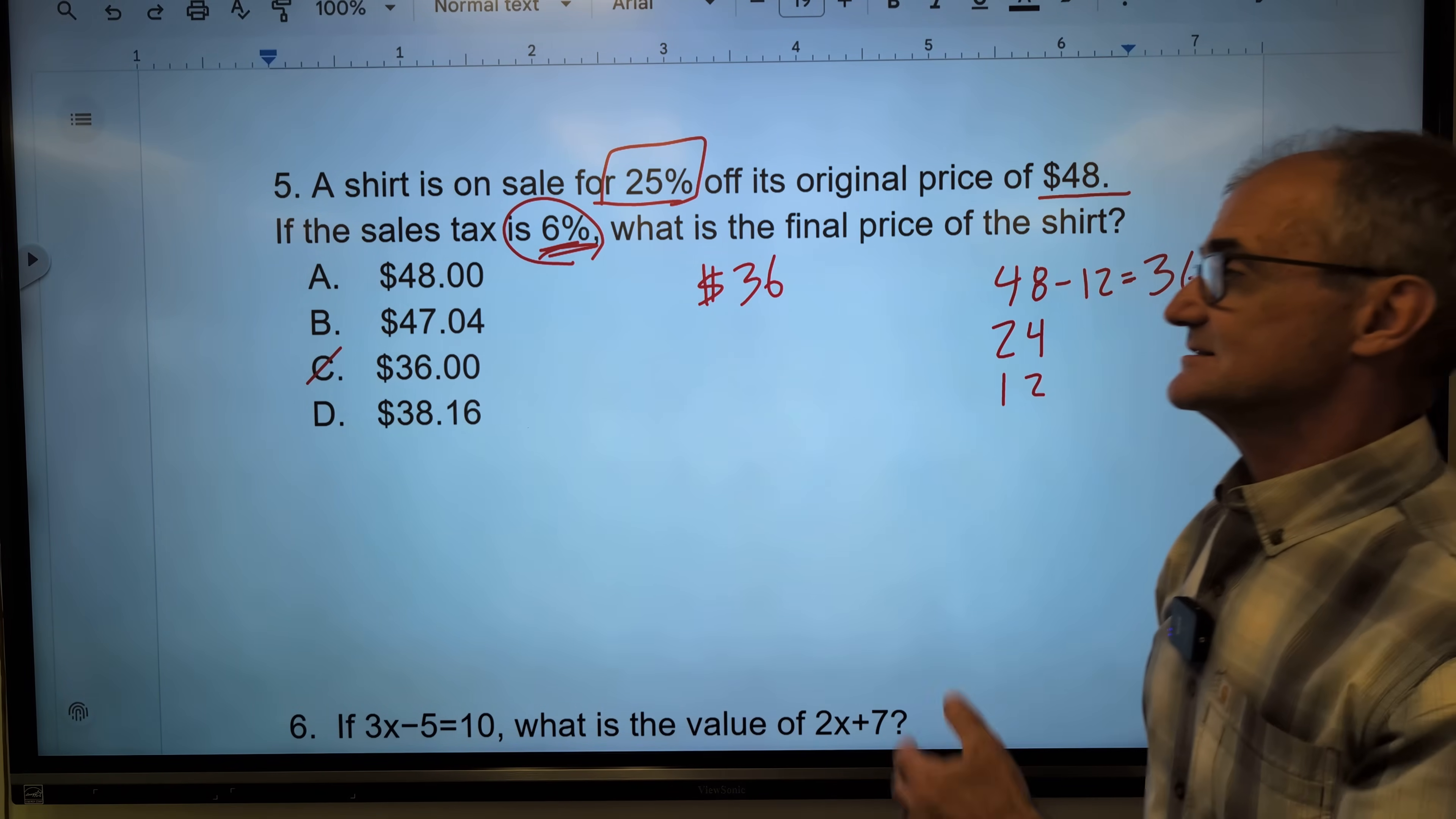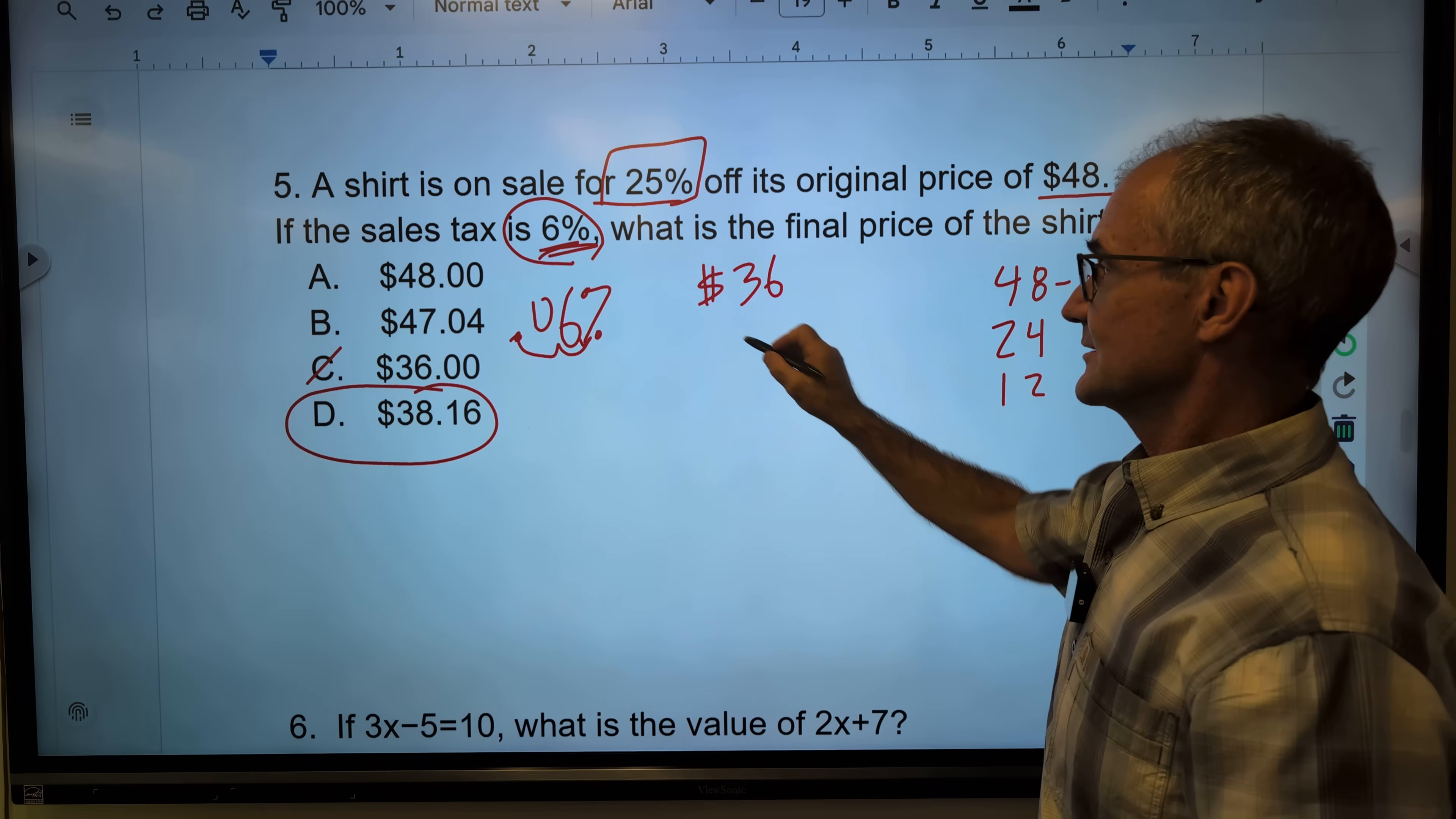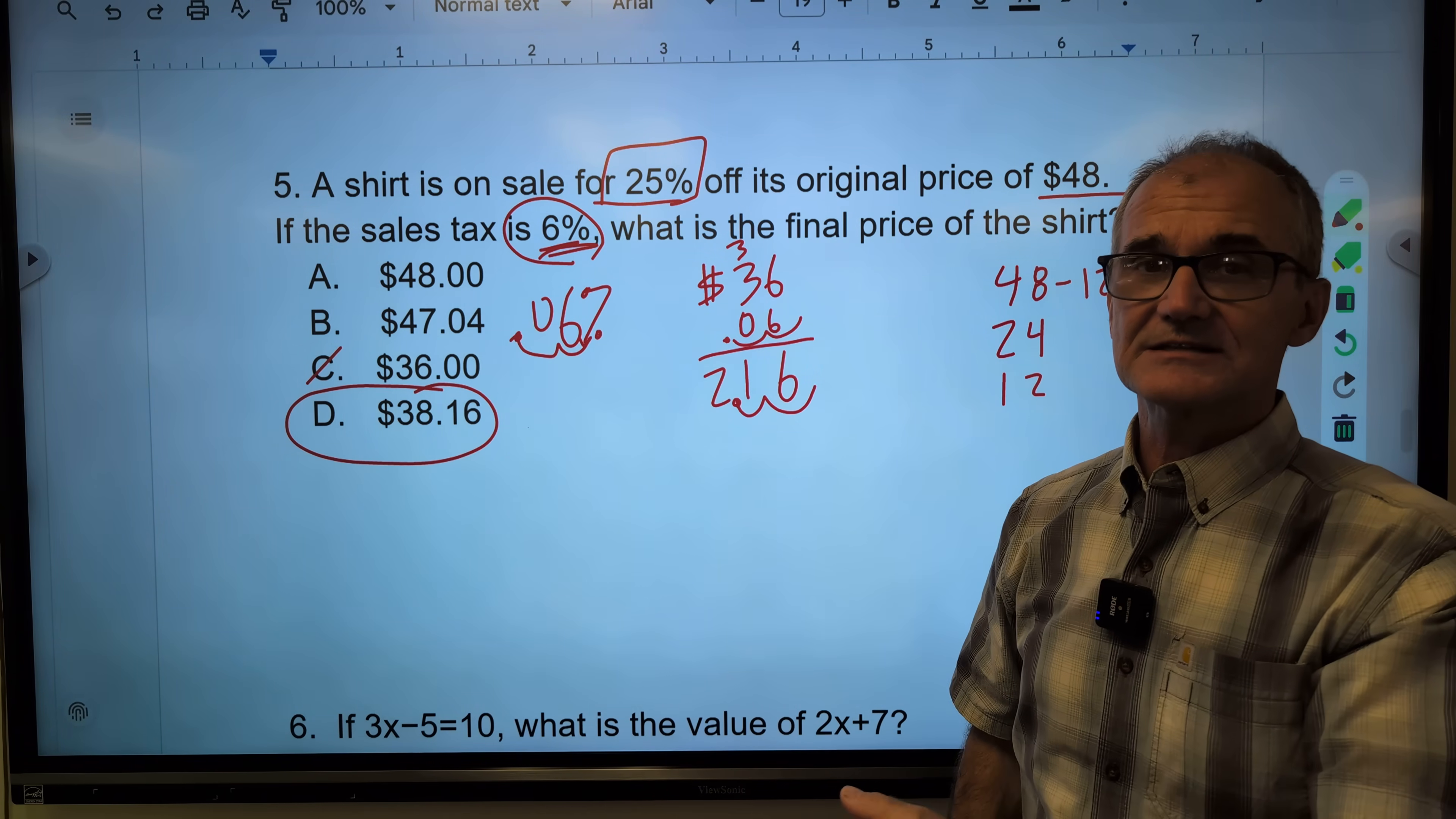If I wanted to multiply that out and get the exact answer, I would take that 6%, convert it to a decimal - I think of this thing as an arrow shooting it over one, two places. So 6% is 0.06. I'm going to put that 0.06 under the 36. That's going to give me the tax. 6 times 6 is 36, carry the 3, 18, 21. The decimal place is over one, two. I'm going to pay $2.16 in tax. $2.16 on the 36 gives me the exact value of 38.16. I'm just showing you some shortcuts because it is a no calculator test and it is timed.